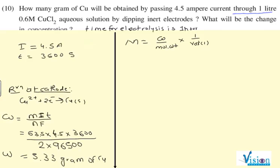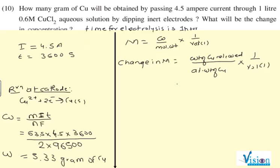Now we can find change in molarity equals to weight of copper released upon atomic weight of copper into 1 upon volume in liter. We have to do this way.